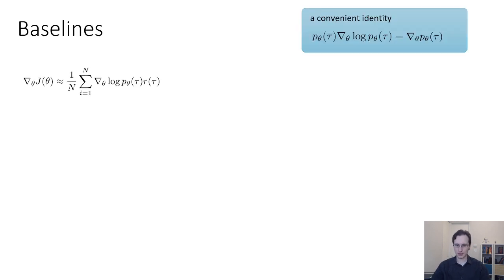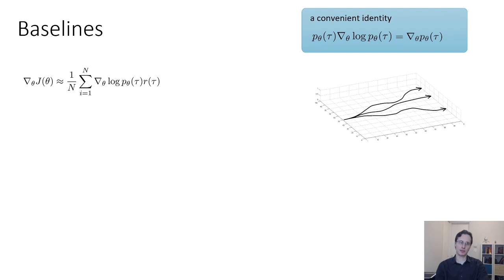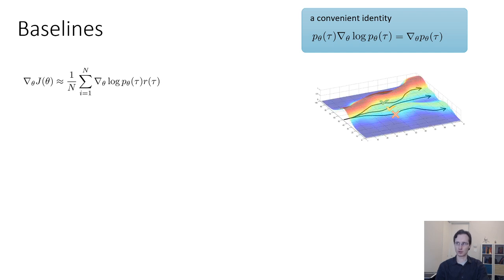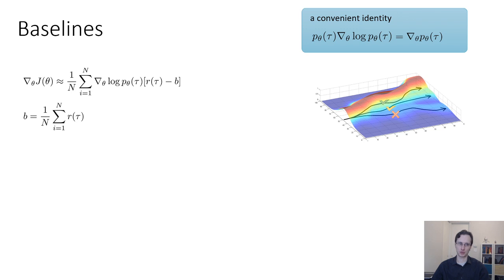The causality trick described before you can always use — it reduces variance, and you'll use it in homework two. There's another slightly more involved trick that also turns out to be very important to make policy gradients practical, and it's called a baseline. Let's think back to the cartoon where we collect some trajectories, evaluate the rewards, and try to make the good ones more likely and the bad ones less likely. Policy gradients will do this intuitively if the rewards are centered, meaning that good trajectories have positive rewards and bad trajectories have negative rewards.